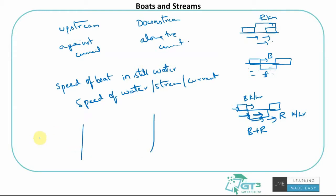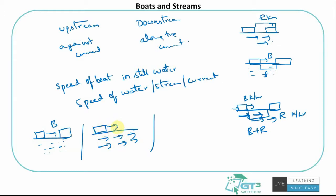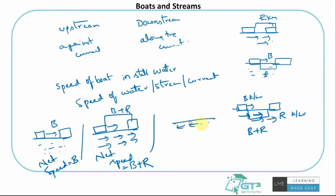There are three situations: first, no flow in the water — the boat travels at speed b km/h. Second, the river flows in the same direction as the boat — the boat is helped, so the net speed is boat speed plus river speed (b + r). Third, the water flows in one direction and the boat goes in the opposite direction — the river pushes against the boat, so the boat covers b minus r kilometers.